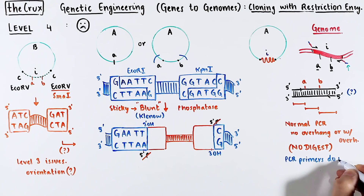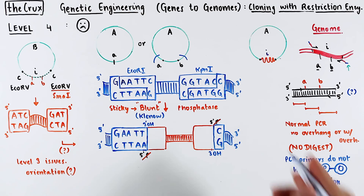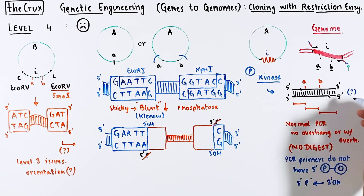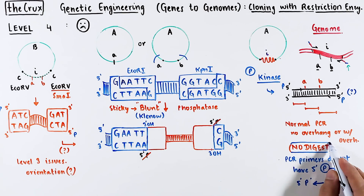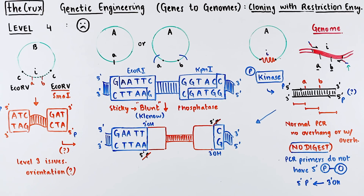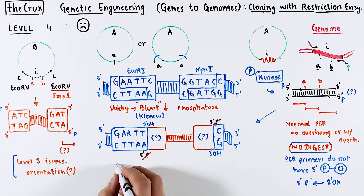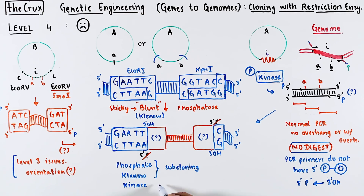For PCR cloning: typically primers don't come with 5' phosphates, and you need 5' phosphate to attach with the hydroxyl to form the backbone bond. So instead, you take the PCR amplicon and treat it with a kinase enzyme. Kinases add a phosphate to any free 5' end. You don't worry about the phosphate in subcloning because the digestion naturally gives you a phosphate. In PCR cloning, if there is no digest, you don't have a natural phosphate. This kinase-treated insert can now go into the vector. In this style of cloning, it is more likely that you will create a dead site on both sides, and orientation is still an issue. So there is a phosphate removal and a Klenow step for subcloning, and a kinase step for the undigested PCR insert, adding complexity.